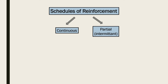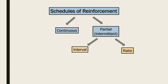Partial or intermittent reinforcement involves only delivering a reinforcement some of the time. The timing of reinforcement can be based on an interval of time or after a number of responses — called a ratio schedule. In a fixed interval schedule, reinforcement occurs after a certain interval of time has passed, for example being paid by the hour, or a rat receiving a pellet every 15 minutes in a Skinner box providing at least one lever press has been made.